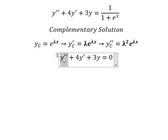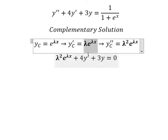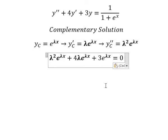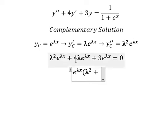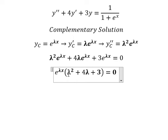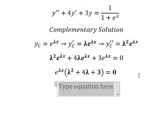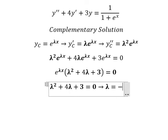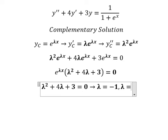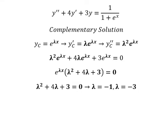Because this is the complementary solution, it equals zero. I will substitute each term in. After factoring out e to the power of lambda s, we apply factorization and find the solutions of the characteristic equation. We get lambda equals negative one and lambda equals negative three.